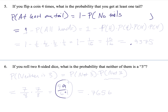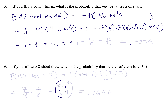That equals one minus the probability the first coin is heads, and the second is heads, and the third is heads, and the fourth is heads. Again, multiplication goes with 'and.' So this is one minus one-half times one-half times one-half times one-half. Multiplying across numerator and denominator: one minus one-sixteenth equals fifteen-sixteenths. As a decimal, that's 0.9375.